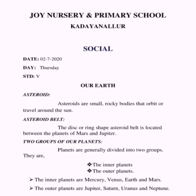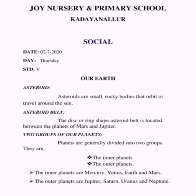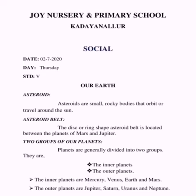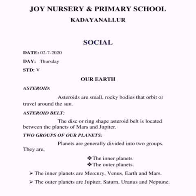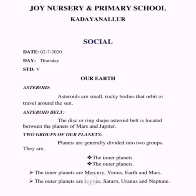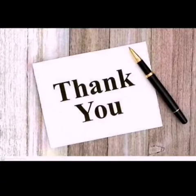Two groups of our planets: Planets are generally divided into two groups — the inner planets and the outer planets. The inner planets are Mercury, Venus, Earth, and Mars. And the outer planets are Jupiter, Saturn, Uranus, and Neptune. After you copy this in your note, take a picture of it and send it to our school WhatsApp number. Thank you.